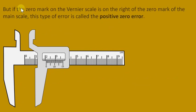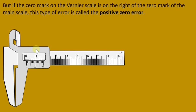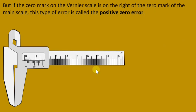Now let's look at the other situation. If the zero mark on the Vernier scale is on the right side of the zero mark of the main scale, this type of error is called the positive zero error. So if we close the jaws and the zero of the Vernier scale is to the right of the zero of the main scale, the caliper has a positive zero error.